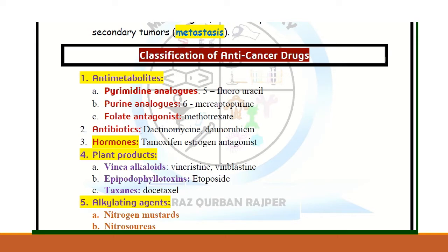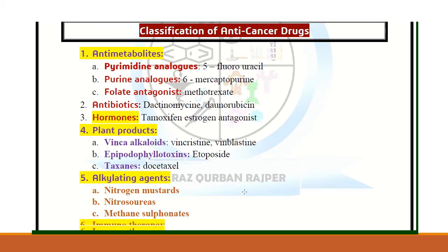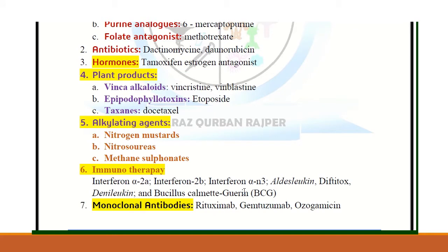The well-known pyrimidine analog drug is 5-fluorouracil, and 6-mercaptopurine is an example of a purine analog. There are also certain types of antibiotics useful in the treatment of cancer — examples include dactinomycin and doxorubicin. Hormone therapy can also be useful depending on the type of cancer, including estrogen antagonists and testosterone antagonists. Cancer drugs can also be obtained from natural plant sources — examples include the vinca alkaloids, such as vincristine and vinblastine.